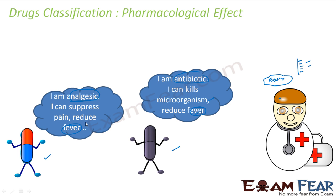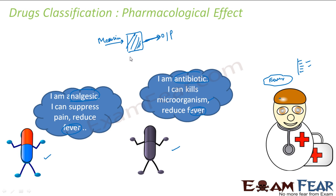For example, analgesic can suppress pain, reduce fever, etc. Antibiotic can reduce fever and kill microbes also. This is purely based on the output — like a black box. You give the medicine and observe the output. You took one medicine and it helped you combat your fever, so you say this medicine is used for fever. You took this medicine and your acidity is gone, so it is used for acidity. You had malaria, you took this medicine, and your malaria is gone.